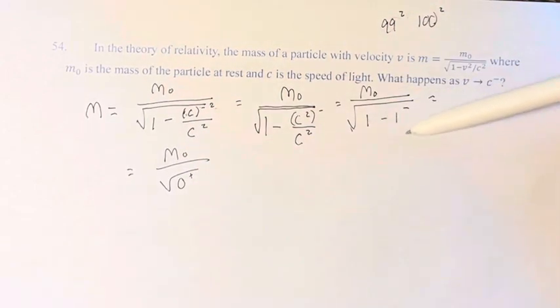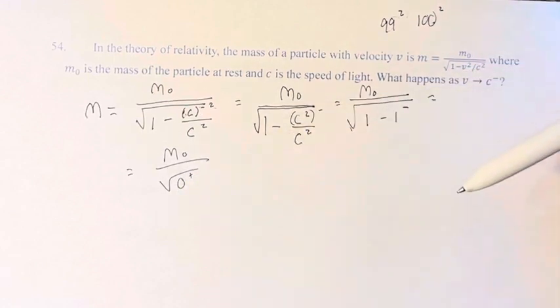We're subtracting a number slightly less than 1, so we get a value slightly greater than 0. And as this gets closer to 1, the difference gets closer to 0.